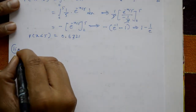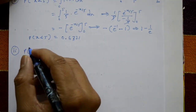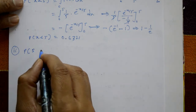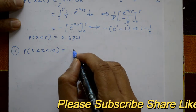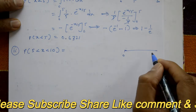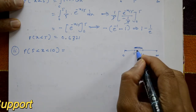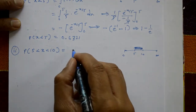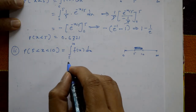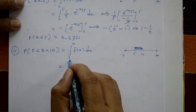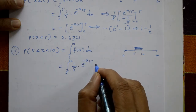Now go to Case 2: the probability of a call lasting between 5 and 10 minutes, P(5 < X < 10). On the distribution from 0 to infinity, we calculate the area between 5 and 10. This is the integral from 5 to 10 of f(x) dx, where f(x) = (1/5) · e^(−x/5) with respect to x.